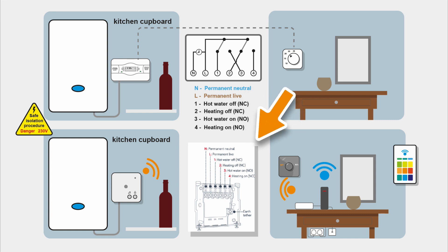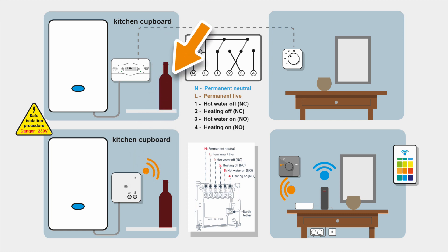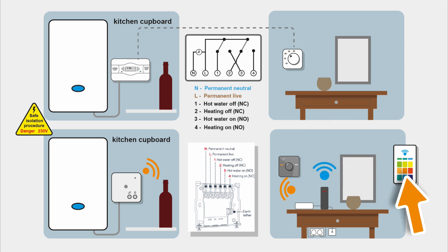When upgrading to a smarter system, you need to check what you've got in place - you might just be able to swap the old programmer out for the new receiver, or you might have to adjust the wiring. In this case it's exactly the same and you can push the receiver onto the old back plate. The new smart thermostat doesn't need a powered connection - it runs on batteries and sends a signal to the receiver by radio waves, not Wi-Fi. If your Wi-Fi goes down you can still control heating from the receiver or the thermostat on the wall.